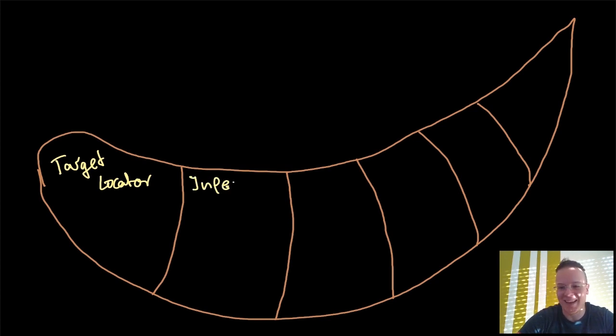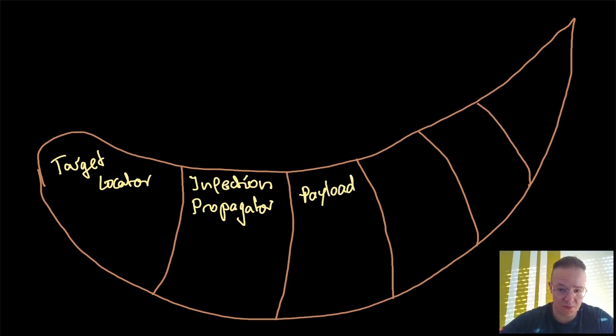And the most important ones are the first two, which are related to the propagation. So there's the target locator and there's the infection propagator. These two components are essential. Without them, you don't have a worm.